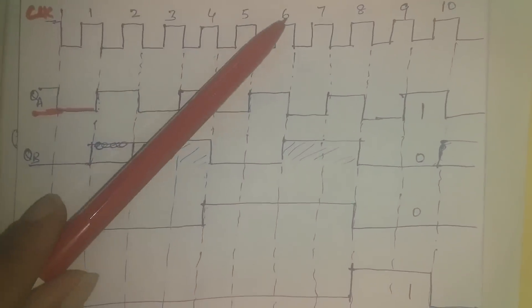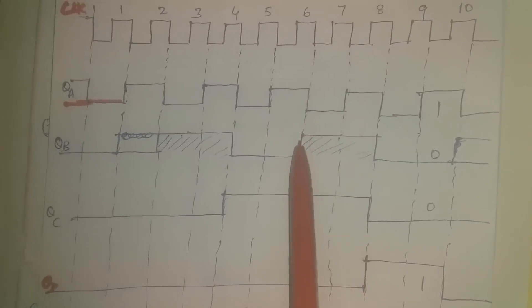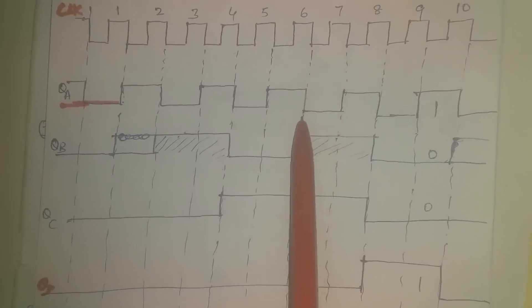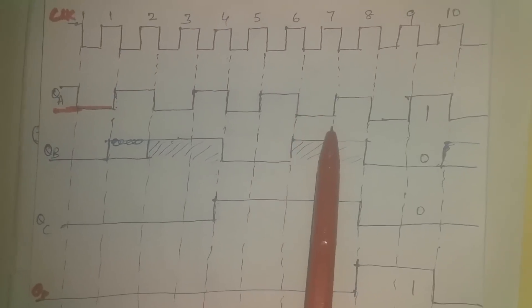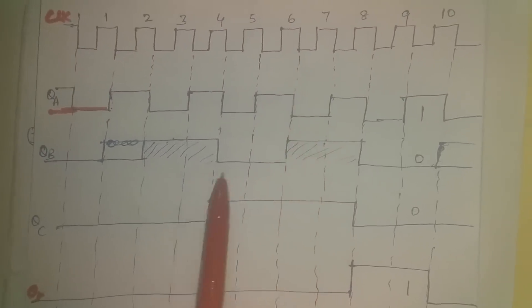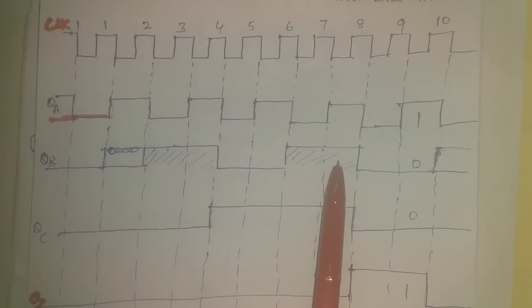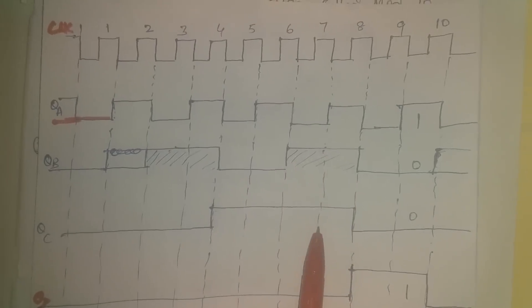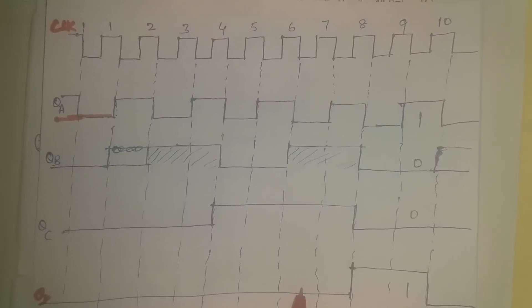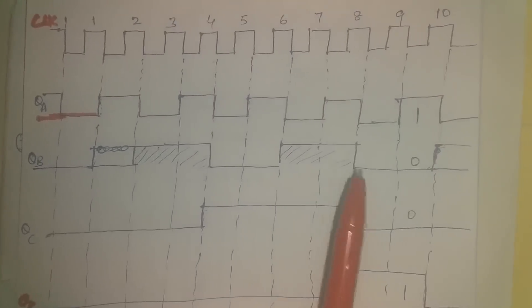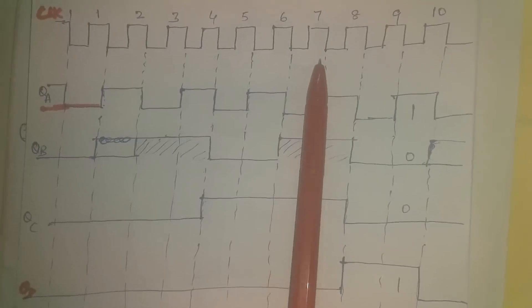At the negative edge of the sixth clock pulse, QA goes low. Since QA is going low, QB undergoes a transition and goes high. QC continues to be high and QD continues to be low (zero). At the negative edge of the seventh clock, QA transitions from zero to one; QB continues high; QC continues high; QD continues low.